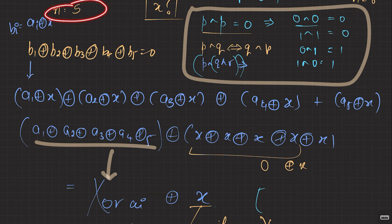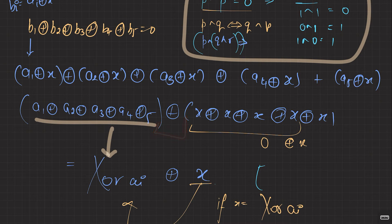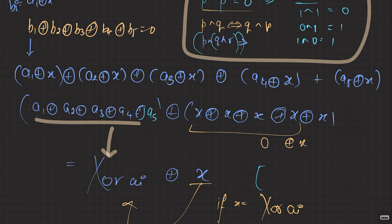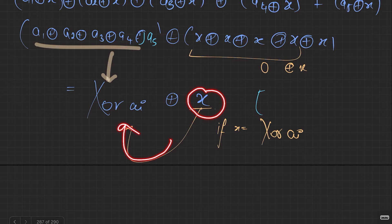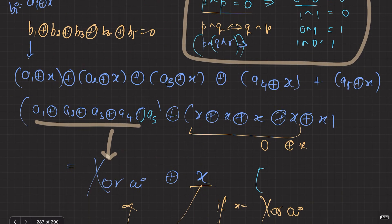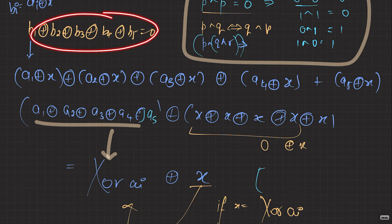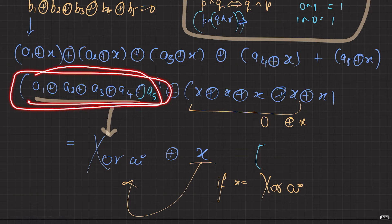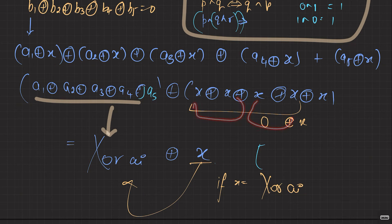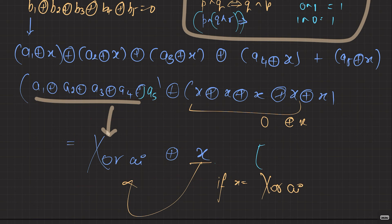The same holds true for n equals 7, 9, and any odd number. Because for any odd n, after all even pairs of x cancel, you're always left with one x remaining. So the expression reduces to XOR of all a_i XOR x. To make this zero, x must equal XOR of all a_i. This is the solution for odd n.